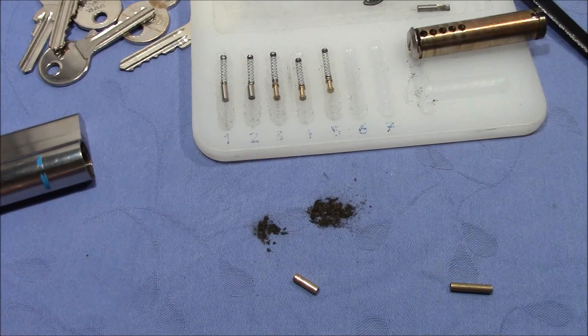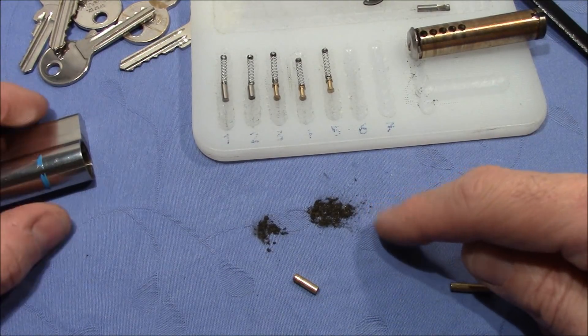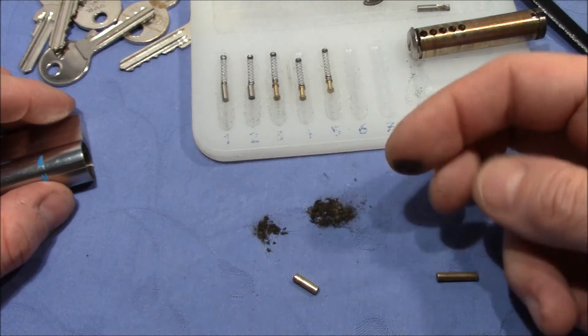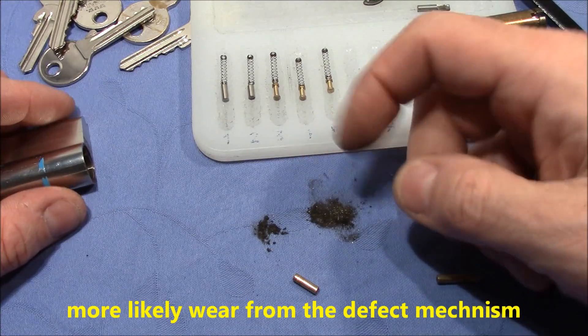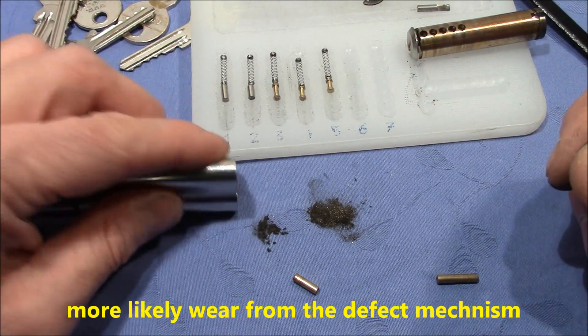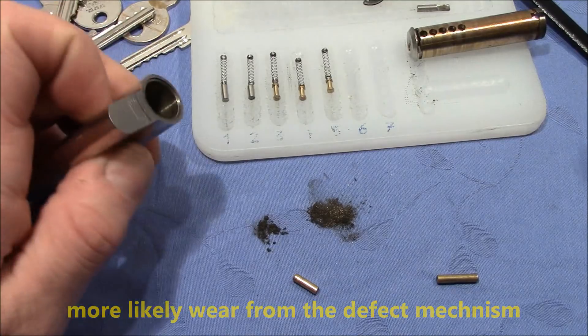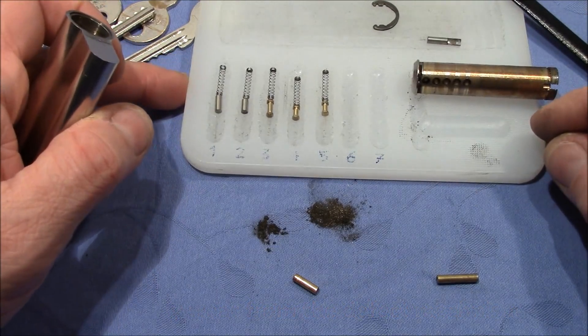Alright, so there's a lot of, I don't know what it is, maybe that's lubrication from the factory because we didn't do anything with this lock, so this must have been done already in the factory. Probably some graphite.